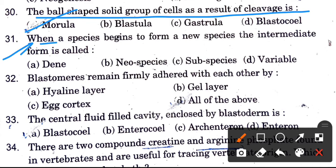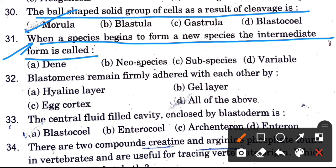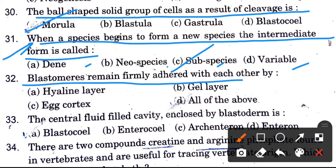When a species begins to form a new species, the intermediate form is called — options are new species, sub-species, and variable. The answer is sub-species.